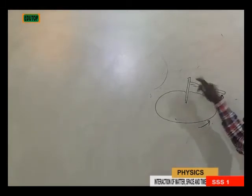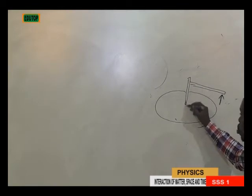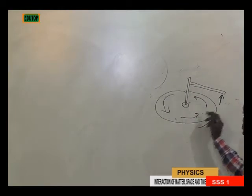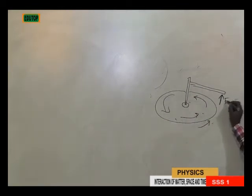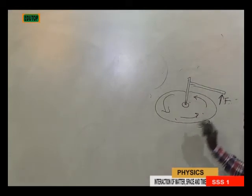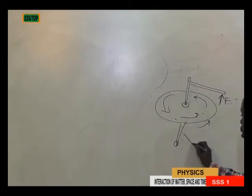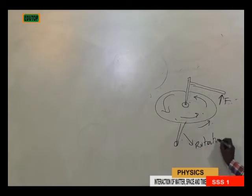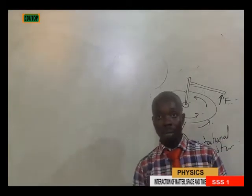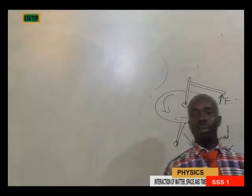For me to move this thing round, for me to move the handle and allow this particular body to rotate, I will apply what we call force. When force is applied in the direction, this body will rotate — it is exhibiting rotational motion. That is the actual meaning of rotational motion.